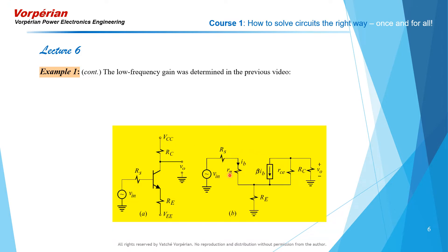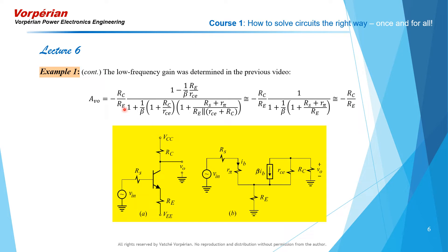With the two capacitors taken out, we previously worked out the voltage gain by applying the extra element theorem to the dependent generator beta·I_B. The voltage gain is given by an expression in which we treated the beta generator as the extra element and reinstated it with a correction factor. For large beta, we can perform two successive approximations: in the numerator, a term can be ignored since R_CE is much larger than R_E, and dividing further by beta makes it negligible.